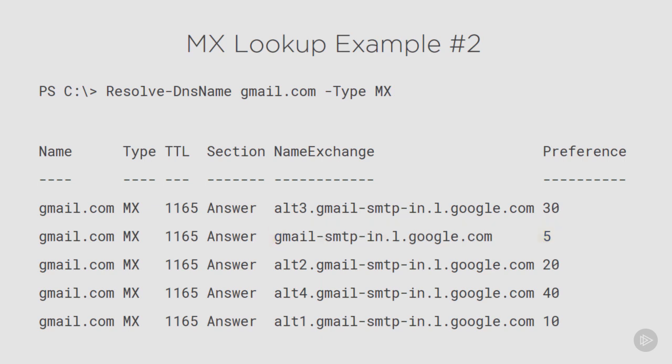One thing to notice is that the host names used as MX records don't necessarily need to match the domain name you're sending to. Gmail.com has MX records with host names in the google.com namespace. This is quite common — you could have completely unrelated host names for MX records. It's typical when companies use third-party email filtering services like Exchange Online Protection, where the host names for MX records will usually be the anti-spam provider's domain, not the organization's domain.